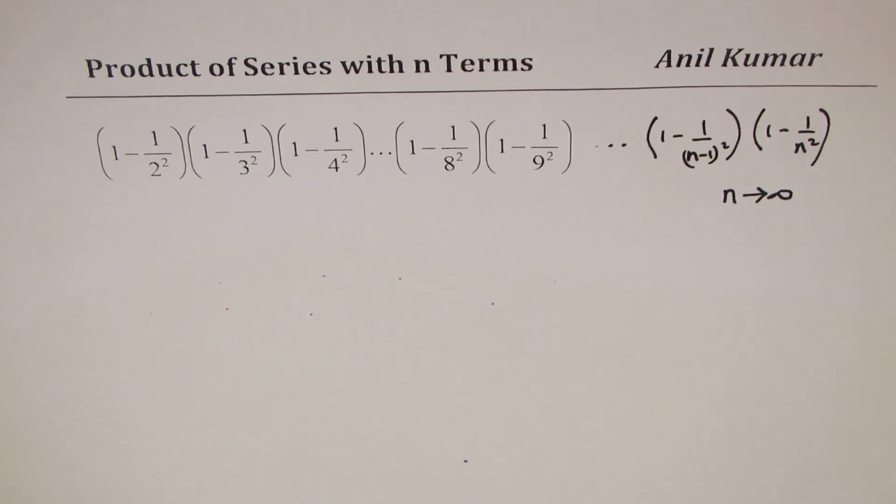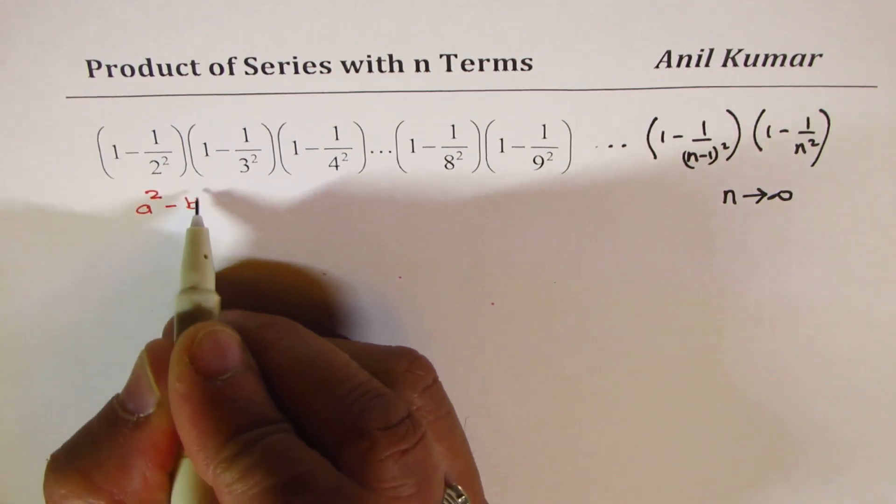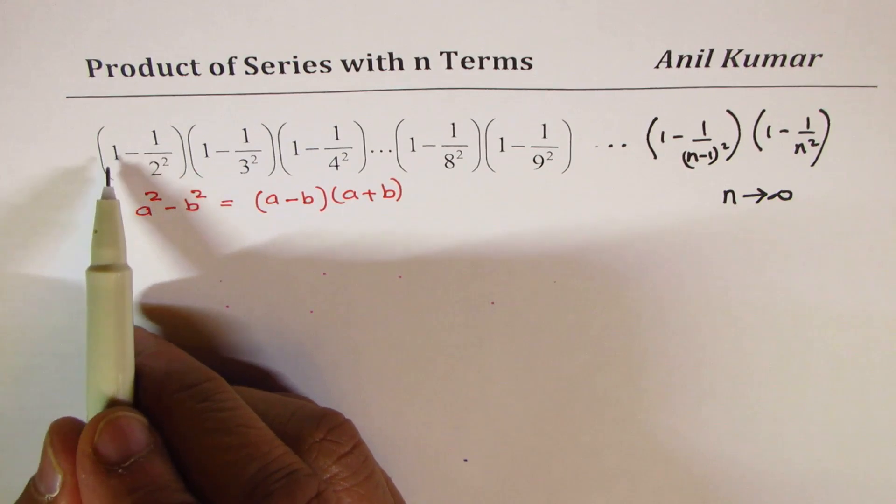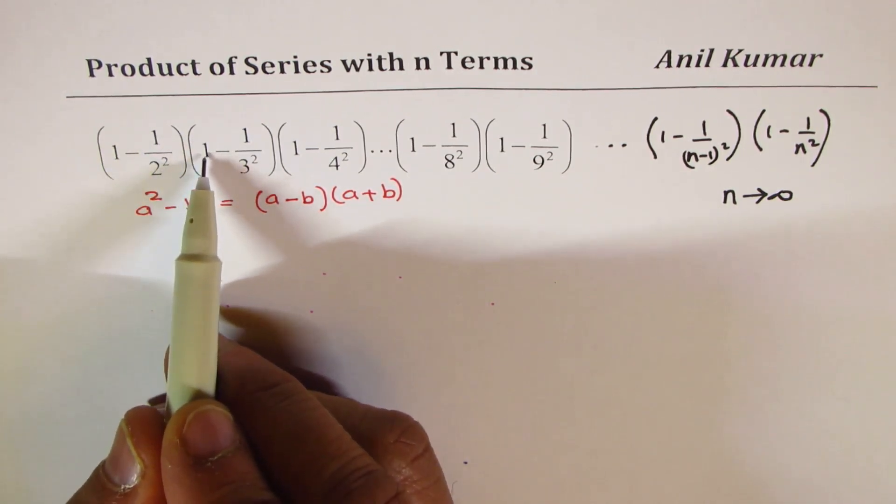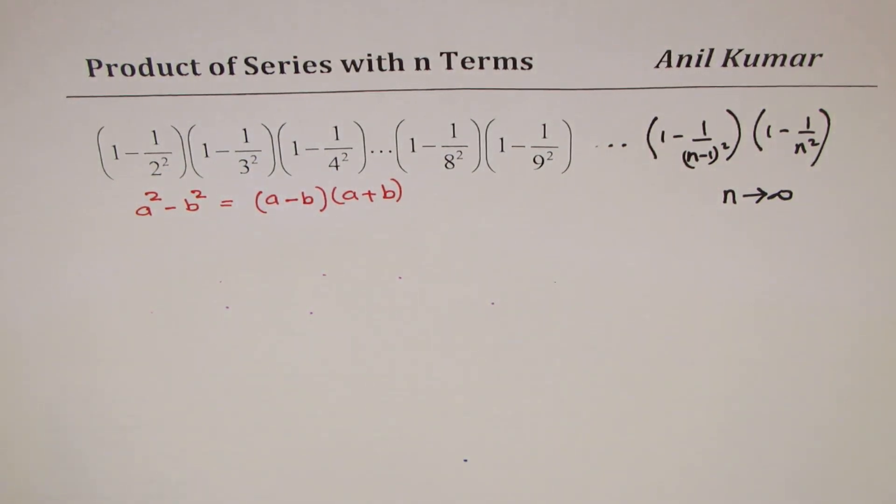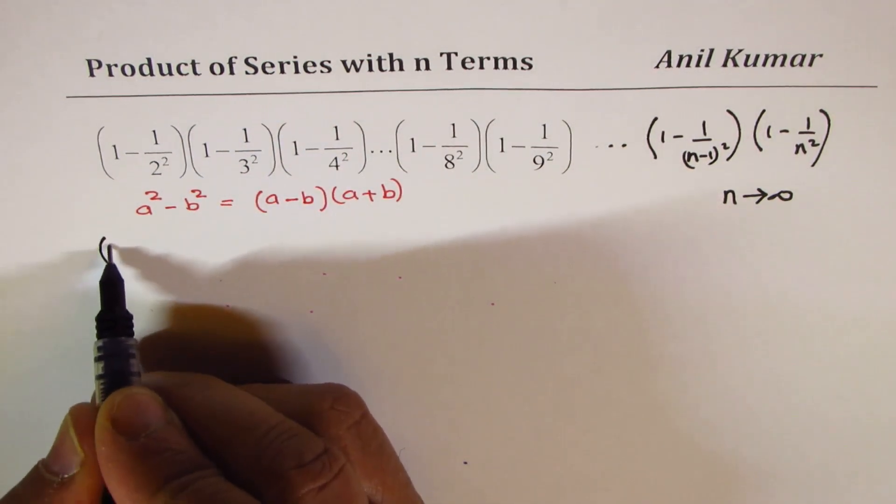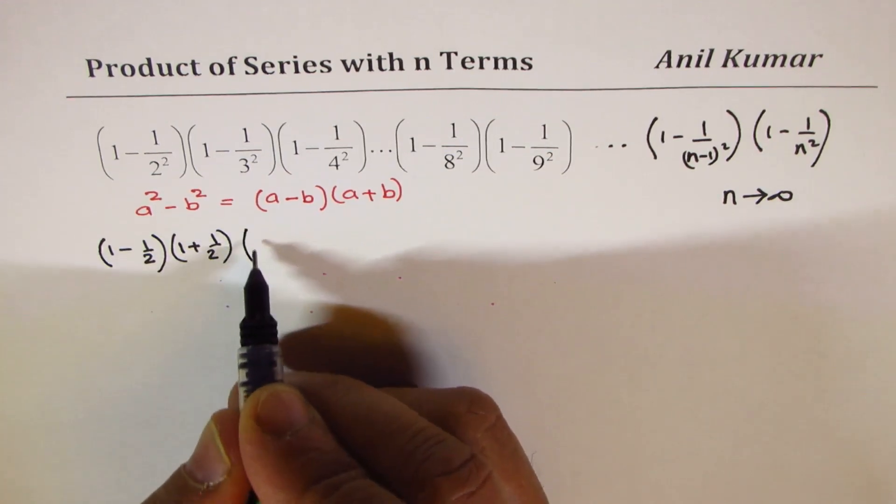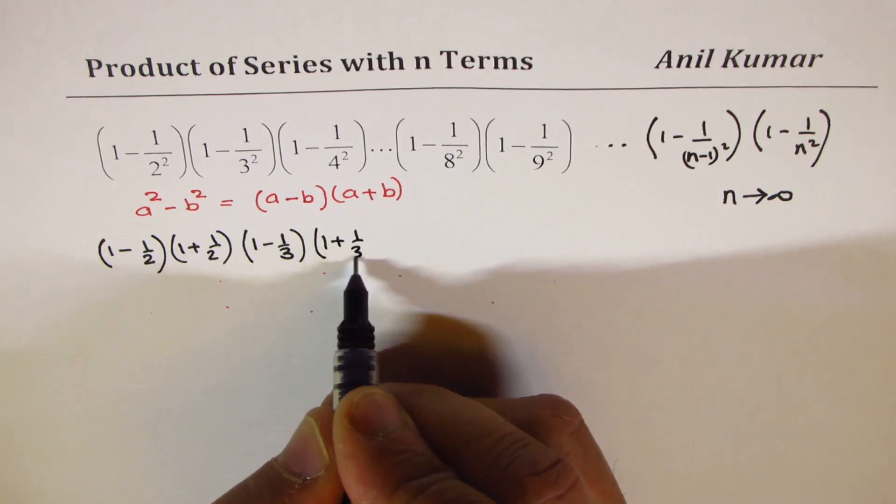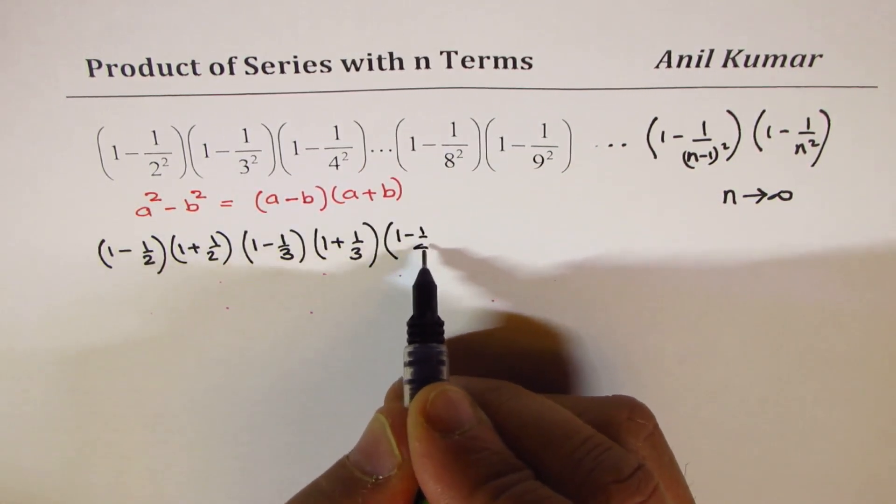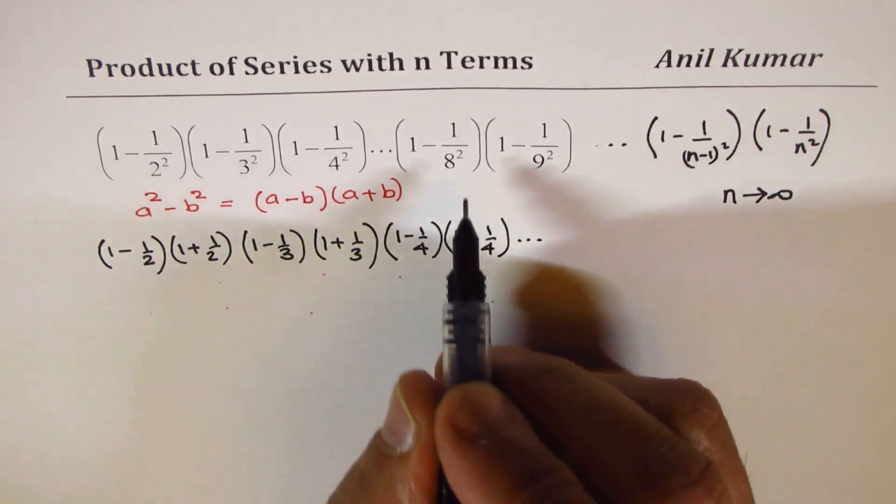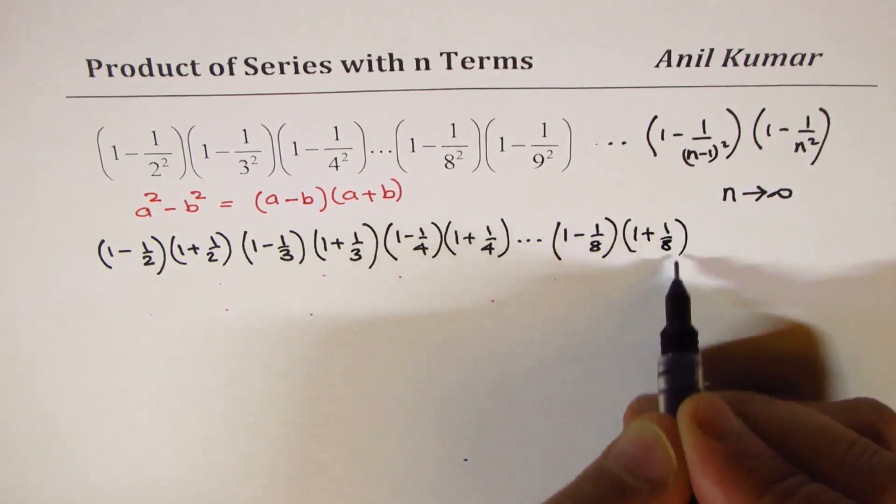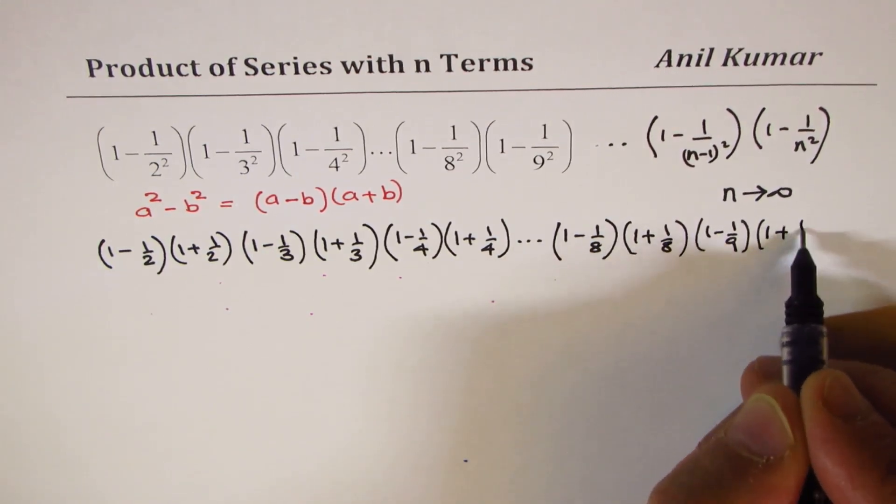Let us look into the better option, which is to use difference of square formula. If you have a square minus b square, you could always write this as a minus b times a plus b. So, here you can see we have 1 square minus half square, 1 square minus 1 over 3 square, and so on. And therefore, we can actually write these terms as 1 minus half times 1 plus half. The second term could be written as 1 minus 1 over 3 times 1 plus 1 over 3. Next term could be written as 1 minus 1 over 4 times 1 plus 1 over 4, so on. So, first we will work for just 9 numbers. And this could be written as 1 minus 1 over 8 times 1 plus 1 over 8. And then we have 1 minus 1 over 9 times 1 plus 1 over 9.